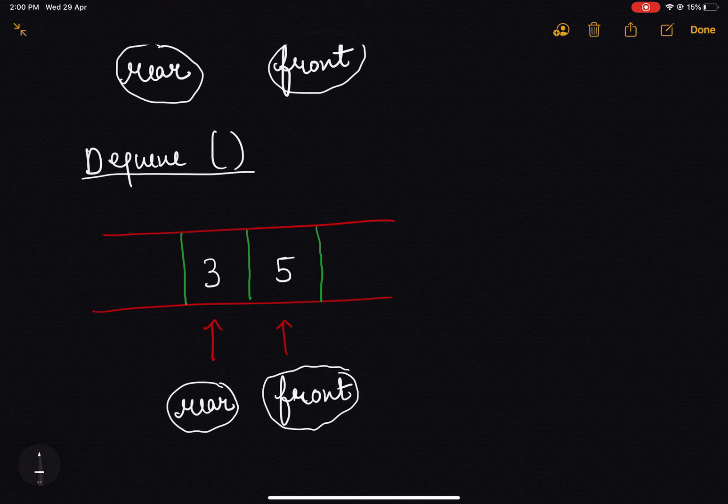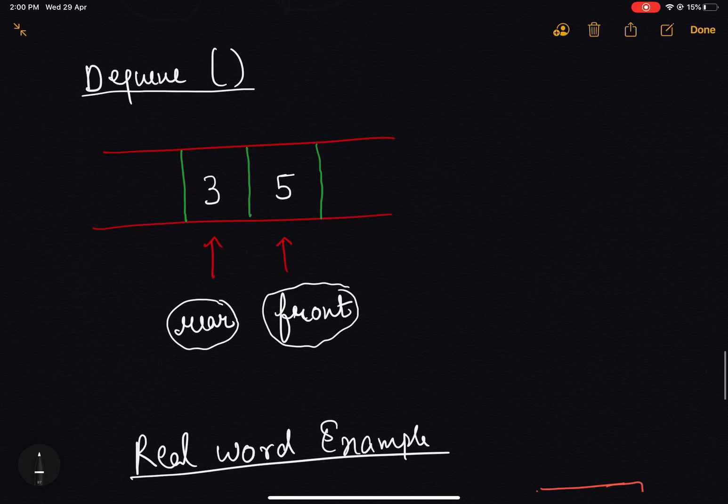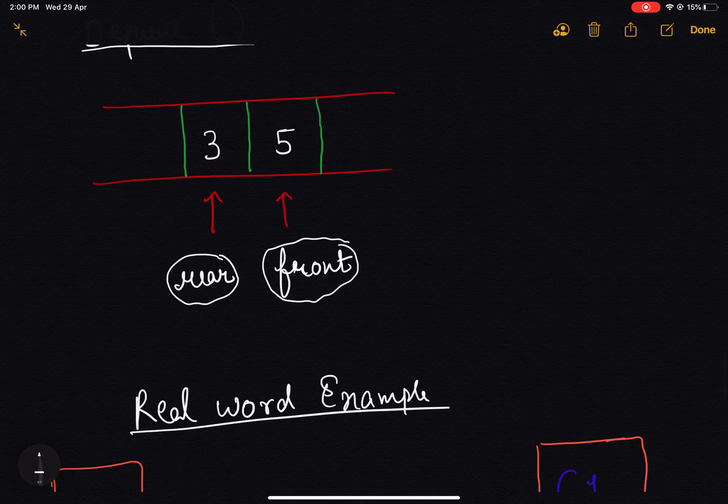We have done the simulation part and we have seen how the queue works in a high level way. Now let's discuss some real world examples to understand it better. It is generally used when there is a shared resource that's supposed to serve some requests and the source can handle one request at one time. In such scenarios it makes more sense to queue up the requests.